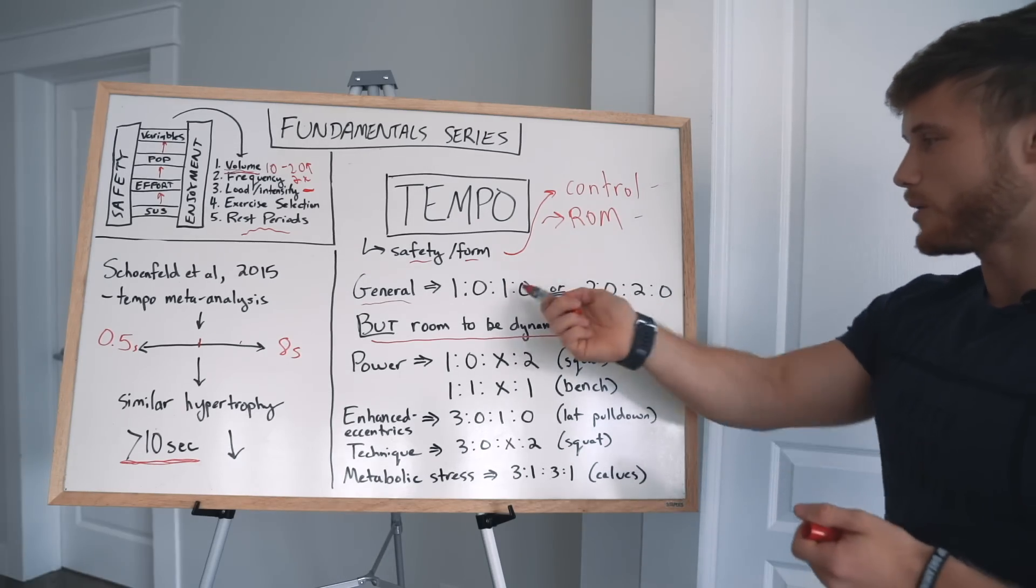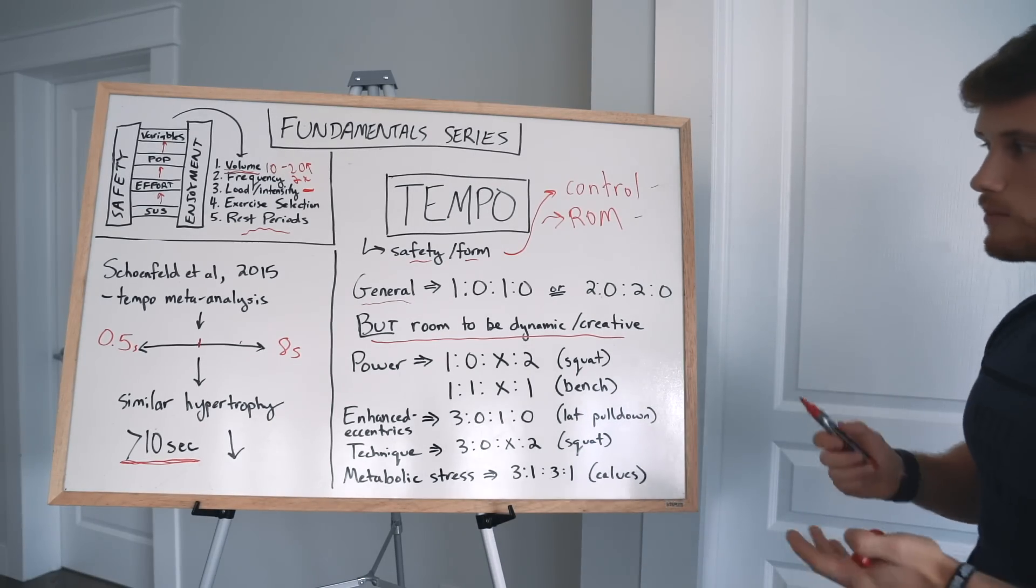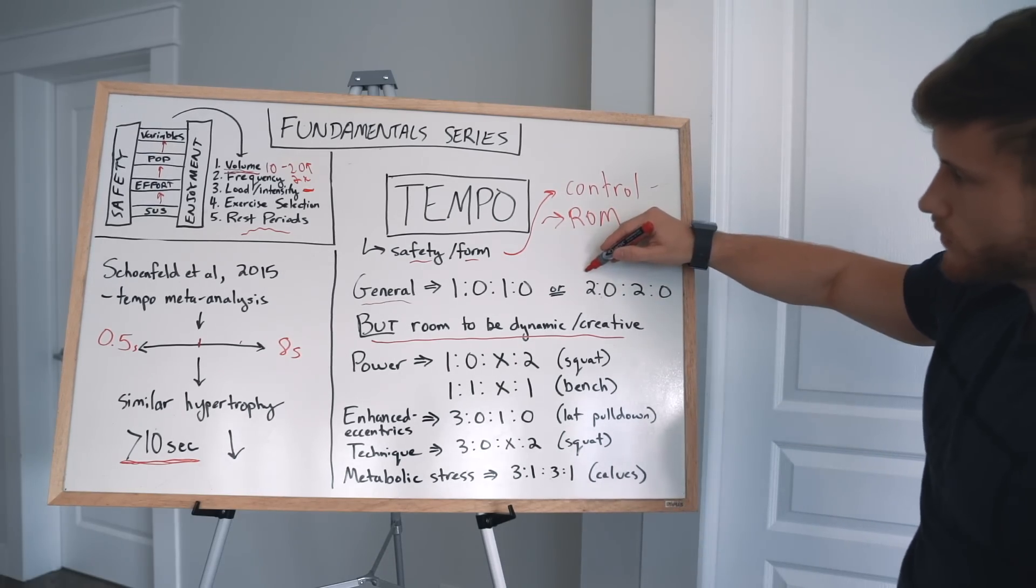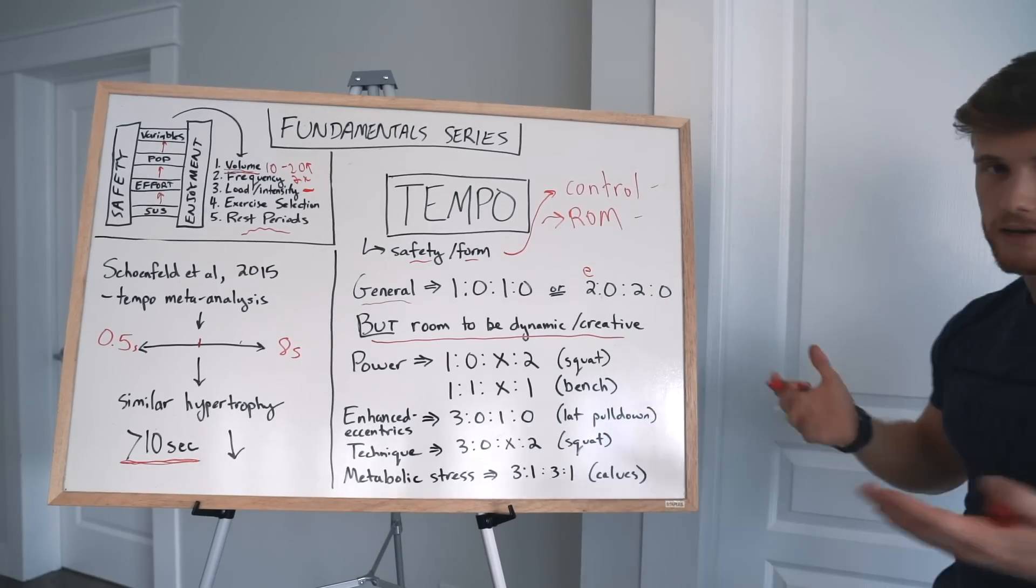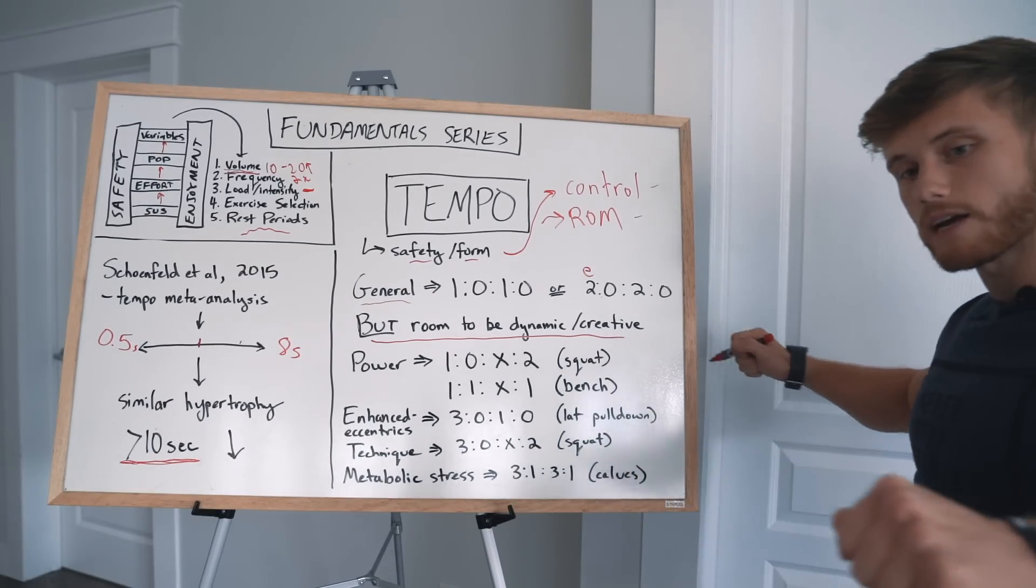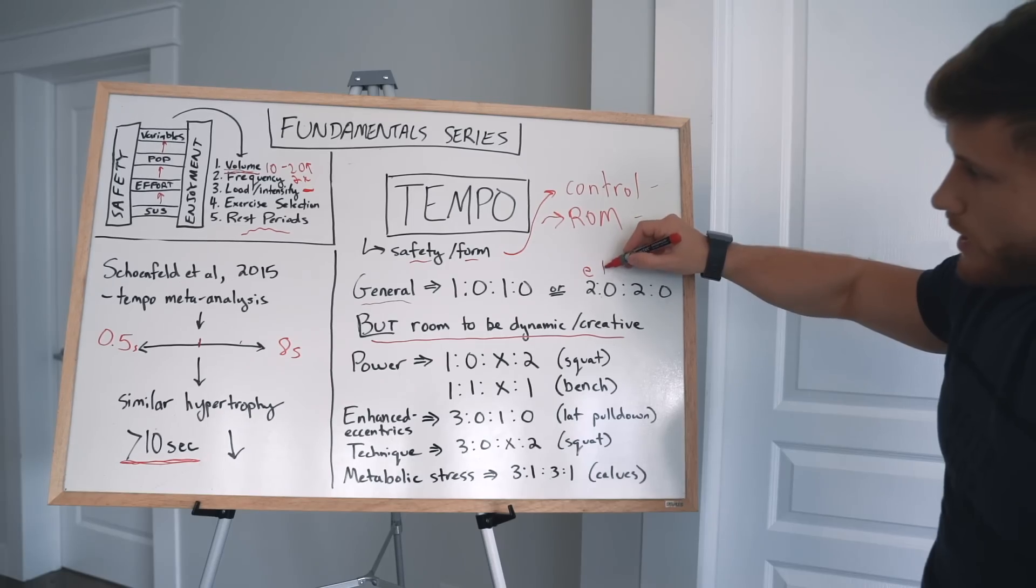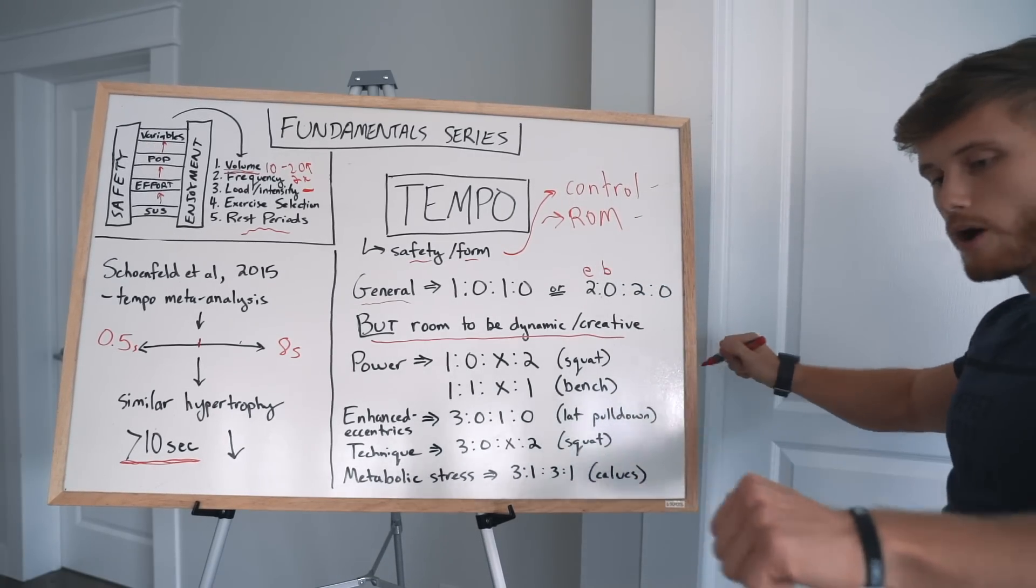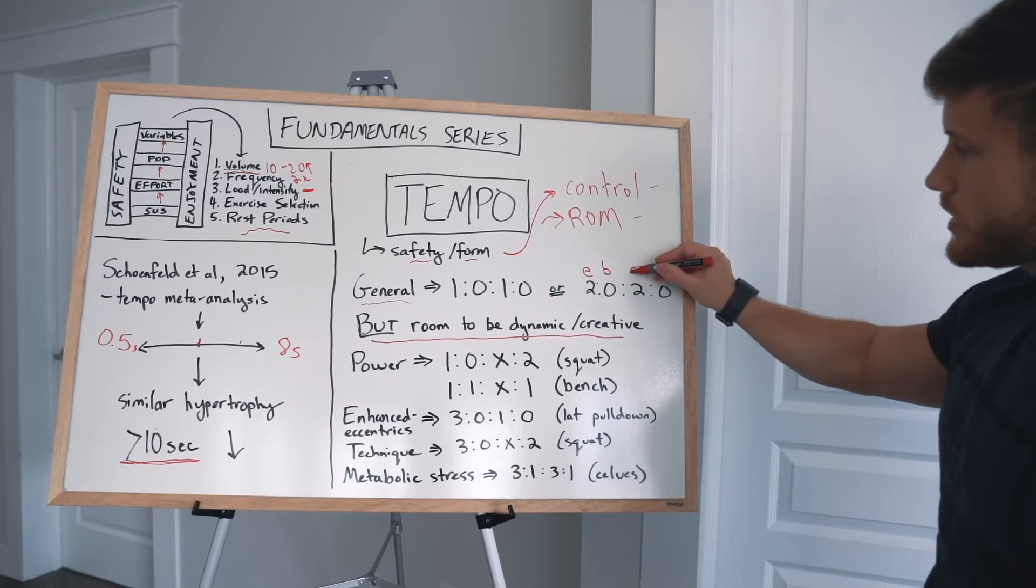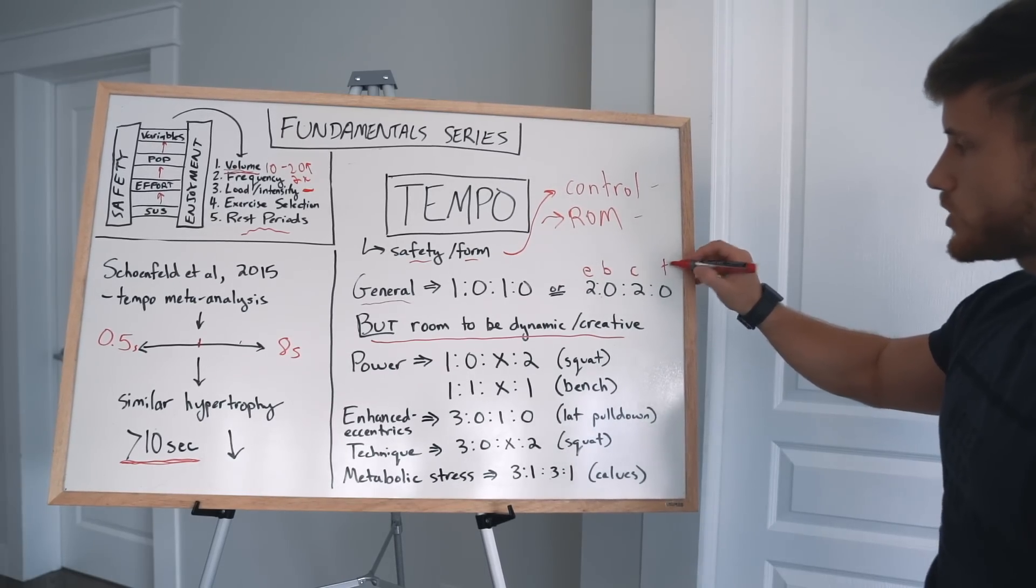So this is lifting tempo notation, and each number refers to a specific phase of the movement. So let's just use this here. So we've got 2-0-2-0. The first number refers to the eccentric. So if we're doing a chest press, for example, say a dumbbell chest press, the 2 here would refer to the two-second lowering phase. So you'd take one count, two count, and then you'd be at the bottom. So this is the bottom of the range of motion here. So you wouldn't have any pause at the bottom. So you'd take two seconds down, and then you'd immediately reverse the range of motion. This is your concentric or your positive. So you'd have two seconds on the way up, and then this is at the top of the range. So you'd have no pause at the top.